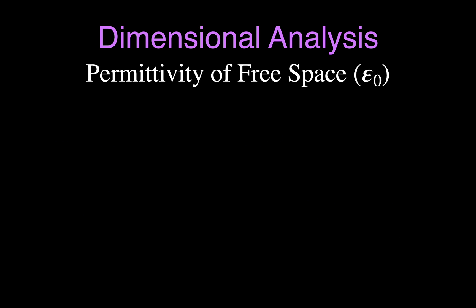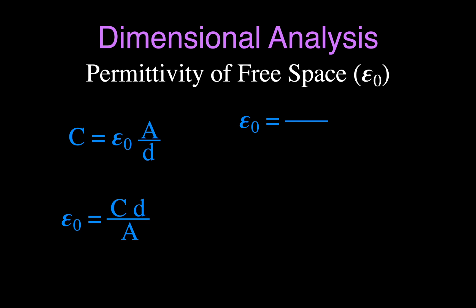For number six, we have the permittivity of free space, ε₀. It appears in the equation for the capacitance of a capacitor: C = ε₀ · A/d, where A is the plate area and d is the distance between the plates. Solving for ε₀ gives capacitance times distance divided by area. Capacitance is in farads, distance in meters, and area in meters squared — the meters cancel partially, leaving units of farads per meter, or F/m.